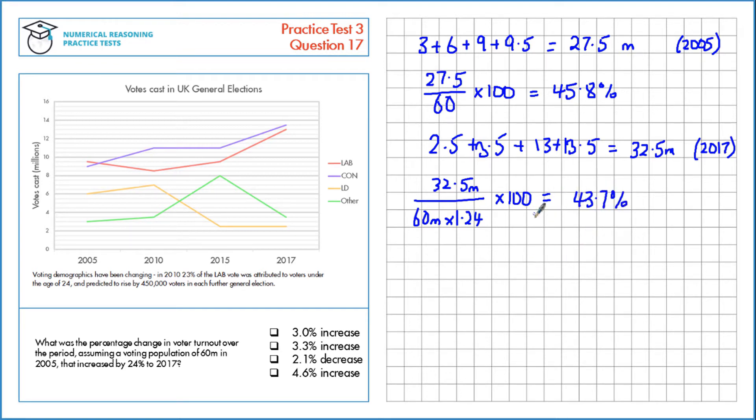Now we need to work out the percentage change in voter turnout. So these are both percentages already, but we need to work out the percentage change, not the percentage point change. That would be the difference. So the percentage change between two numbers. We take the original number. We take the new number